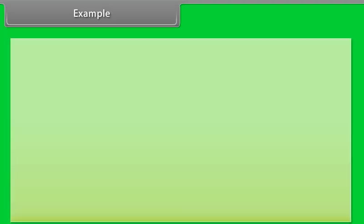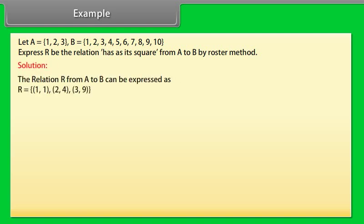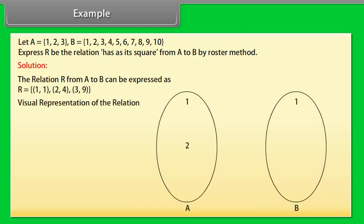Example: Let A = {1, 2, 3} and B = {1, 2, 3, 4, 5, 6, 7, 8, 9, 10}. Express R, the relation 'has as its square' from A to B, by roster method. Solution: R = {(1,1), (2,4), (3,9)}. The visual representation of the relation is shown below.